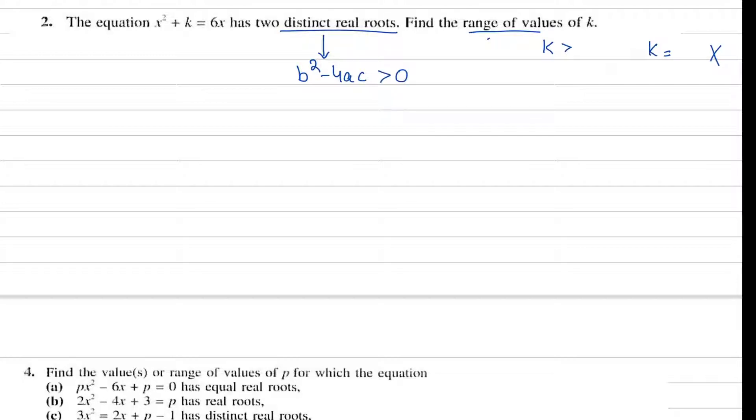Two distinct real roots - this is what you need to know. If there are two distinct real roots, then the discriminant should be greater than zero. First, let's rearrange the equation to standard form: x squared minus 6x plus k equals zero. Now let's identify a, b, and c. a is 1, b is negative 6, and c is equal to k.